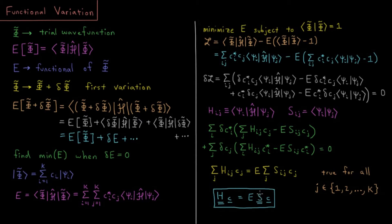In the special case where S is an identity matrix, the case where we have an orthonormal basis set where these overlap elements are one if i equals j and zero if i is not equal to j, then we have Hc = Ec.